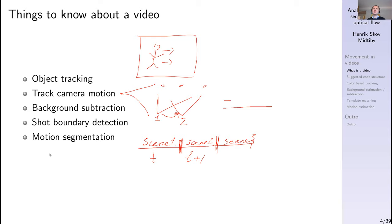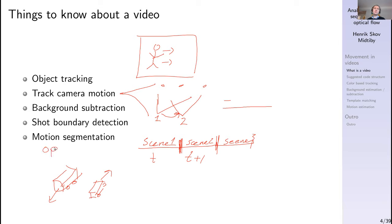We can also look at motion segmentation — determining which parts of an image are moving together. For example, if a bus drives in one direction and a car in another, we can identify them as two separate objects based on which parts of the image move together. Usually, optical flow is computed first before proceeding to motion segmentation. Optical flow will be the last topic we discuss today.